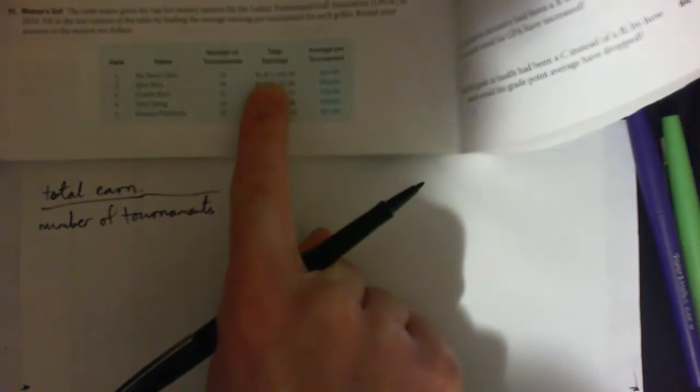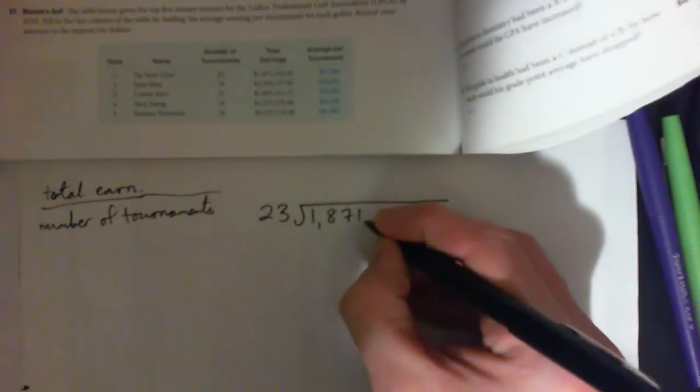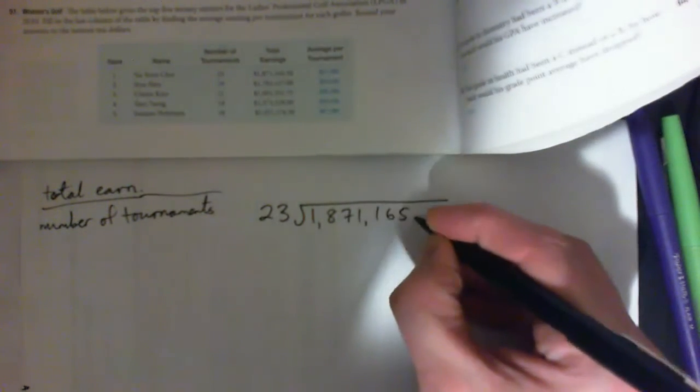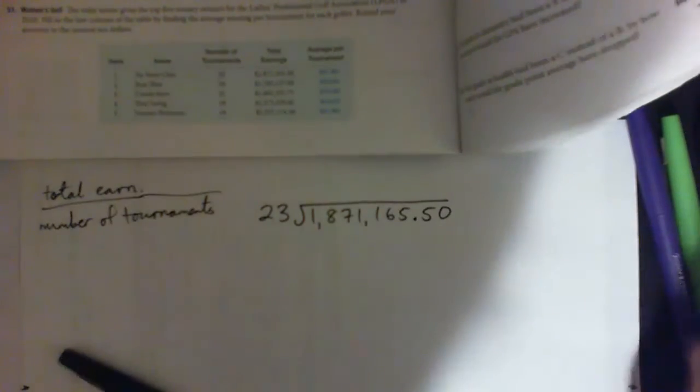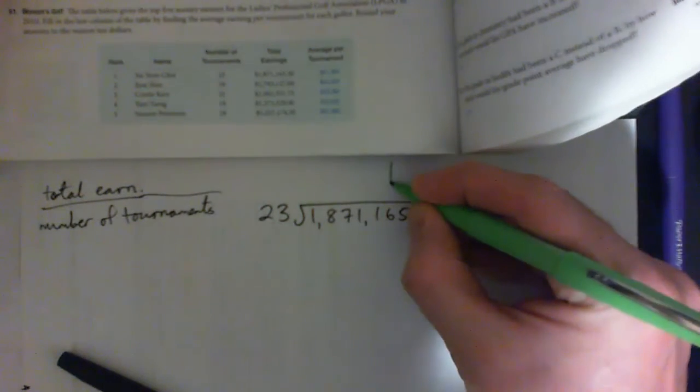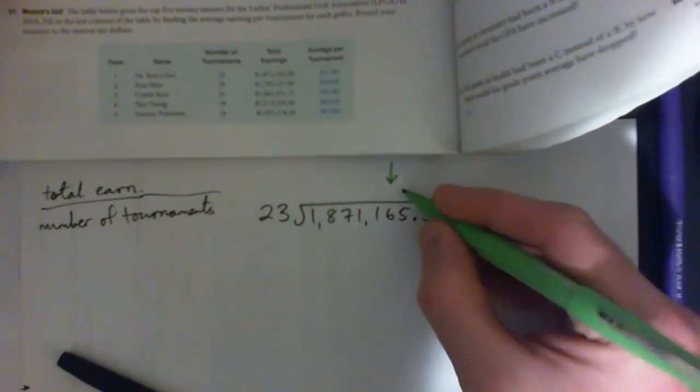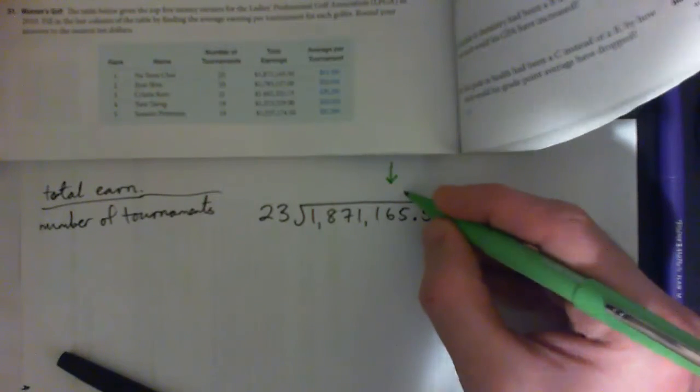So in this case it's 1,871,000 over 23 or 23 into that number 1,871,165.50. Now how far do we have to round this thing? Round your answer to the nearest ten dollars. So remember we've got units, tens, hundreds, thousands. So the nearest ten dollars will be in this column here, right over the six there. So we'll go as far as the units so we know whether to round up or down.